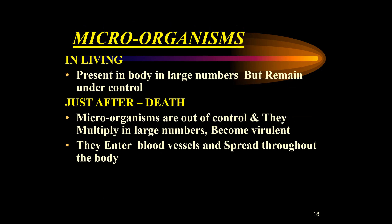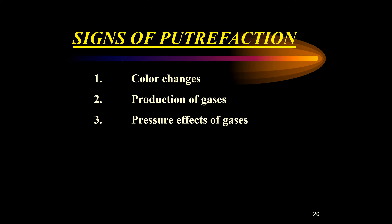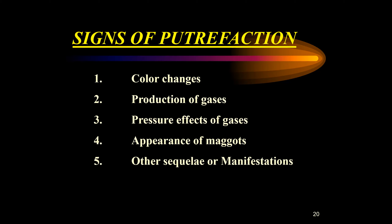Microorganisms are out of control — they multiply, become virulent, enter the blood vessels, and then spread throughout the body. We want to know the progression: how the different signs of putrefaction appear in the form of color changes, production of gases, pressure effects of gases, appearance of maggots, and other manifestations seen in the different stages of putrefaction.